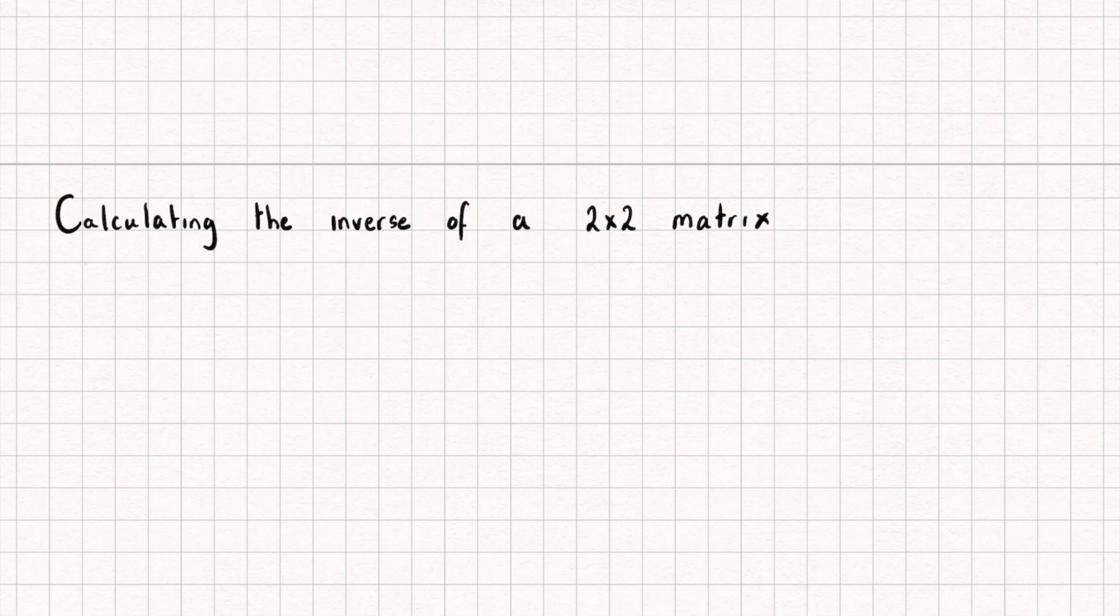So, let's see how we can find the inverse of a 2x2 matrix. But first, let's see what the inverse actually does, and why it might be useful to be able to calculate it. Say we have a 2x2 matrix A, although really, for this property, it could be any square matrix.